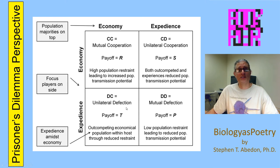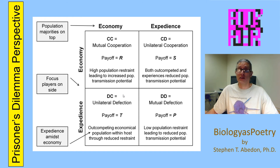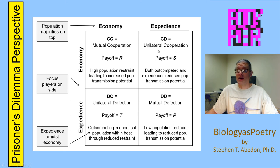In the case of unilateral defection, we have an expedient individual within a population of economical individuals. Because the expedient individual is not a substantial portion of the overall population, the population as a whole tends to display something closer to the optimal level of virulence. Nevertheless, the expedient individual within that population is able to out-replicate the economical individuals, giving you the best of both worlds — higher numbers from faster population growth, in combination with a retention of a relatively high potential to be transmitted.